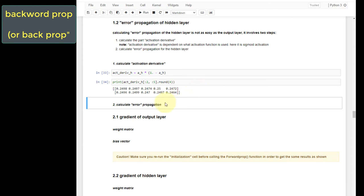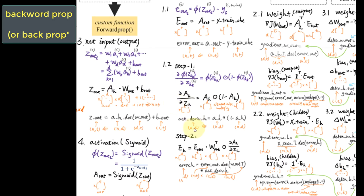The second step of error propagation for the hidden layer is to calculate the error propagation itself. Once we have that complex partial derivative term, it is more straightforward to calculate the error propagation of the hidden layer. It is the multiplication of three parts: the error of the output layer, multiplied by the transposed weight matrix of the output layer to backtrack error responsibilities to the hidden layer, then element-wise multiplied with the partial derivative we just calculated.